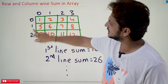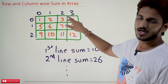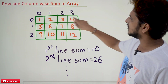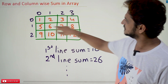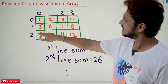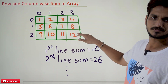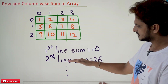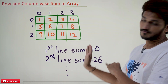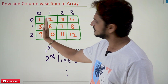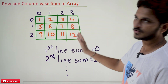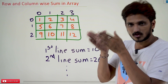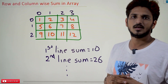Now coming to this example — what output do we need? This is a two-dimensional array having three rows and four columns. We need to find the row-wise sum: take the first row, sum all the elements; second row, sum all the elements; third row, sum all the elements. First row sum is 10, second row sum is 26. Similarly, take the first column, second column, third column, fourth column and sum all elements in each column.